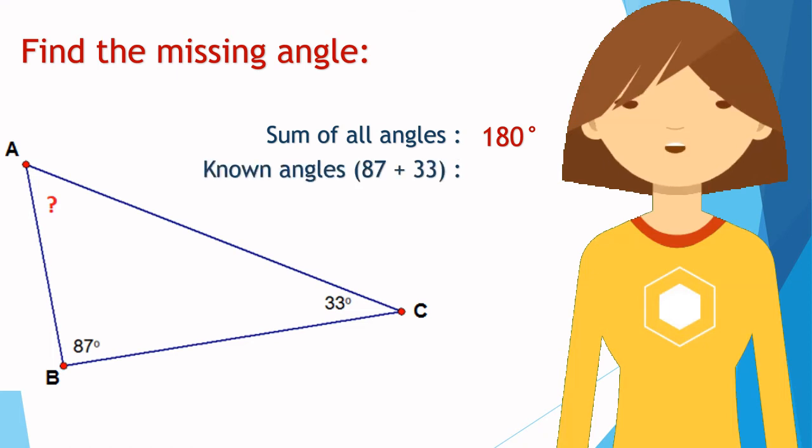The sum of known angles, 87 degrees and 33 degrees, equals 120 degrees. Now subtract 120 from 180 to find the unknown angle which is 60 degrees.